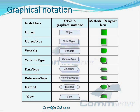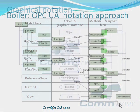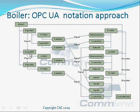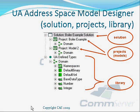OPC UA graphical symbols are very similar to model designer icons. The OPC UA specification also defines symbols for references, but it is not necessary to go into those details now. This diagram shows the boiler using the OPC UA graphical notation. As in the previous diagram, we have the same elements like pipes, drum, controllers, etc. But compared to the previous diagram, this is more precise and more understandable from an OPC UA point of view.